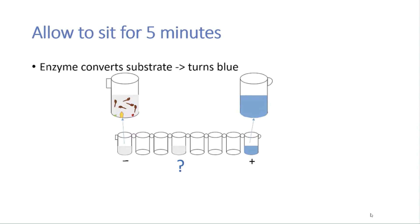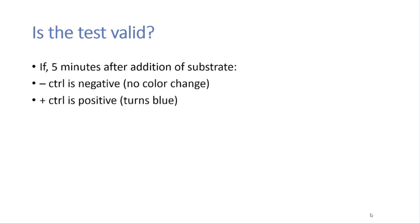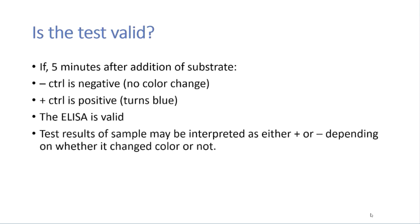The negative and the positive control also help you to determine whether the test is valid. The test is valid if five minutes after addition of the substrate, the negative control is negative and the positive control is positive. If the negative control is positive, you probably cross-contaminated the negative control with positive. If the positive control does not turn blue, you may have skipped a step. Once you determine that your test is valid, your test results can be interpreted. If your test sample did not change color, the result would be considered negative. If it changed color, the result would be considered positive.